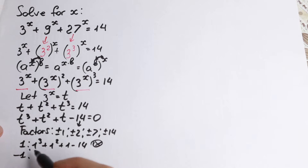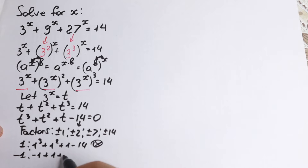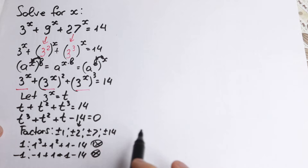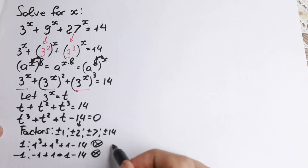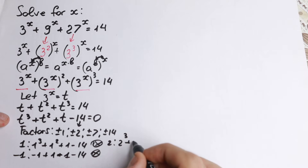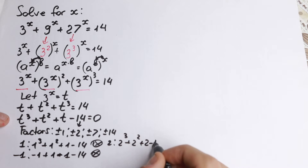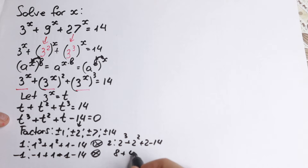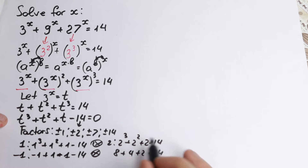Let's quickly try t equals minus 1 — that situation also doesn't give zero, so we reject minus 1. Now let's try t equals 2: two cubed plus two squared plus two minus 14 gives us 8 plus 4 plus 2 minus 14, which is 14 minus 14, equal to zero. So t equals 2 is our factor, meaning t minus 2 is a factor of our cubic expression.